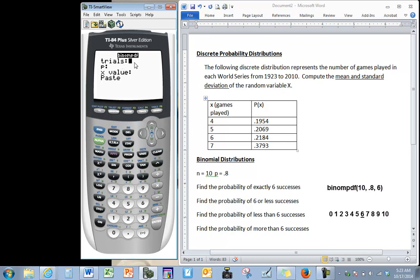You would enter in the number of trials, 10, and press enter. Enter in your probability, make sure it says a decimal, press enter. Then the x value, here we'll find the probability of exactly six successes, so we press six and press enter and then paste.